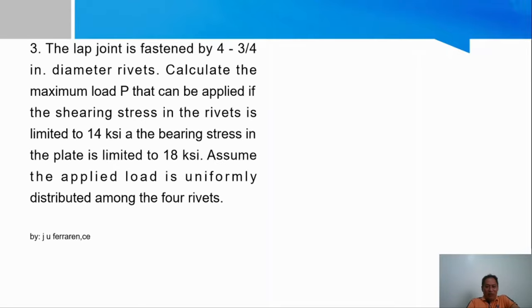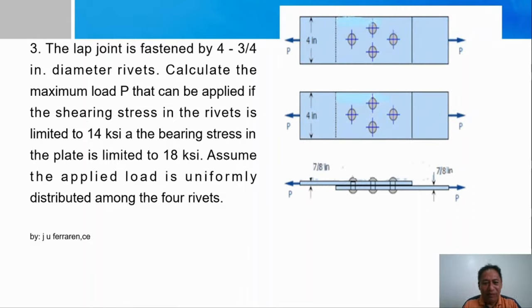This is the problem that I'm going to discuss. There's a lap joint that is fastened by 4, 3/4 inch diameter rivets. Calculate the maximum load P that can be applied if the shearing stress in the rivets is limited to 14 ksi and the bearing stress in the plate is limited to 18 ksi. So there you have the figure.